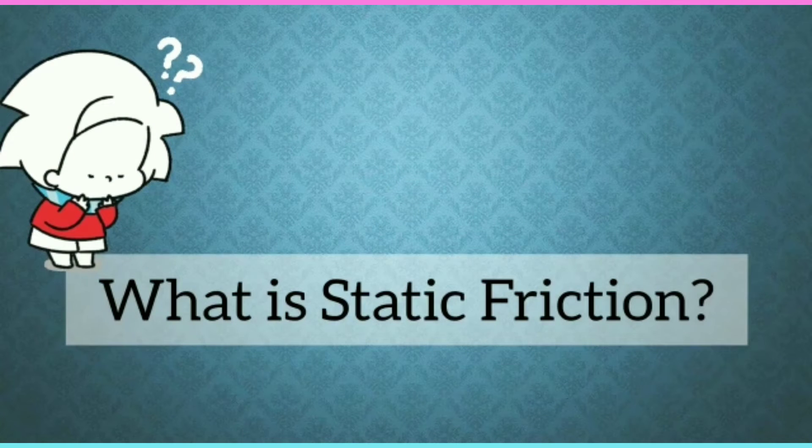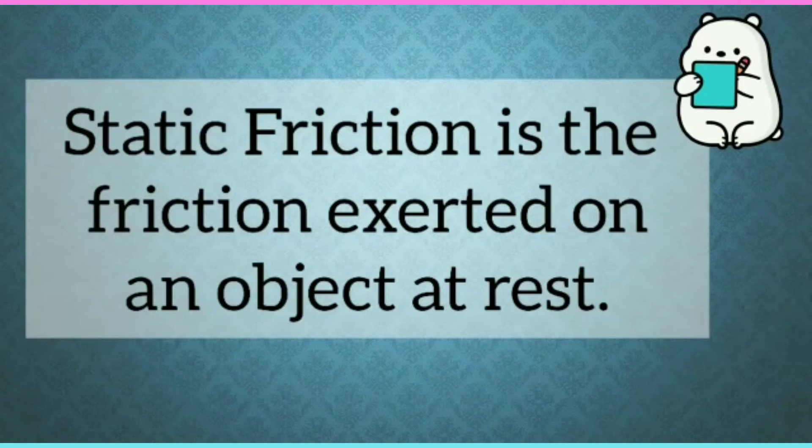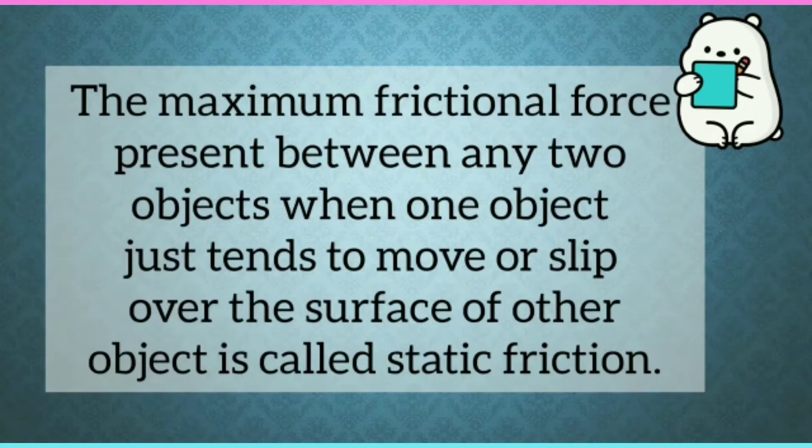What is static friction? Static friction is the friction exerted on an object at rest. Or we can say that the maximum frictional force present between any two objects when one object just tends to move or slip over the surface of other object is called static friction.